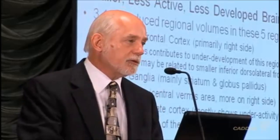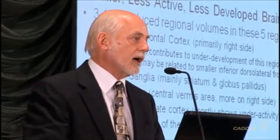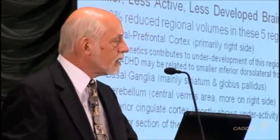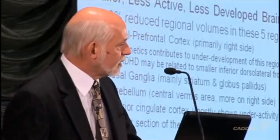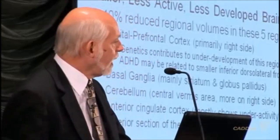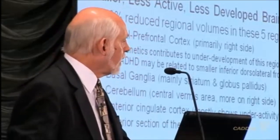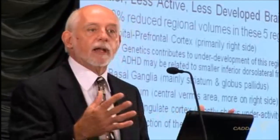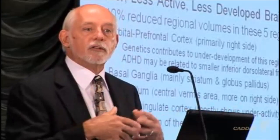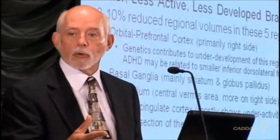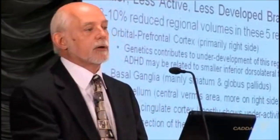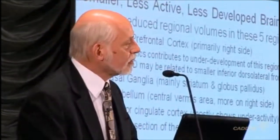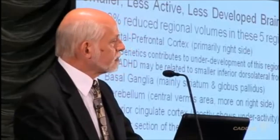The five structures of the brain that are implicated in this disorder are interconnected — it's not as if they're independent. If one is smaller, we would expect to see that across the entire network as well. Let's take a closer look at these structures.